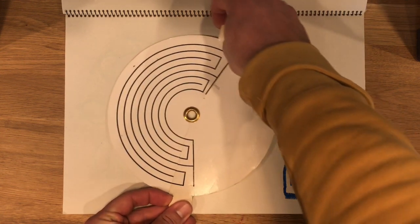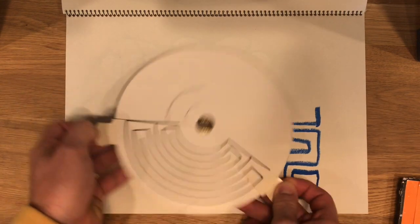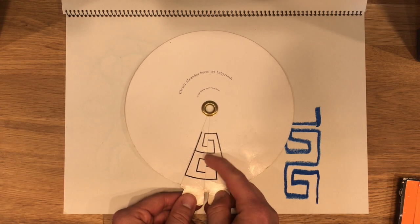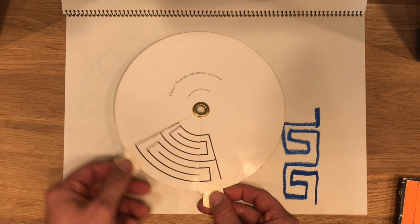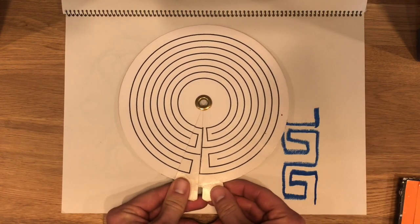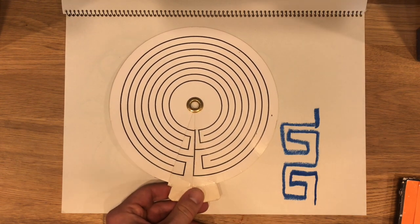This disc that I got from my mentor, Robert Ferre, really illustrates how you take two Roman meanders, wrap them around, and create the seventh circuit classical labyrinth.